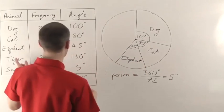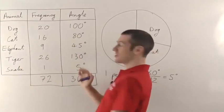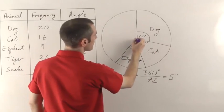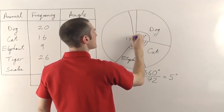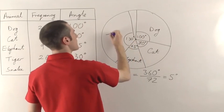Then we've got the tiger. It's 130 degrees. That's a really big one. So that's going to go to about there maybe. So 130 degrees for the tiger.